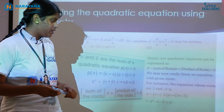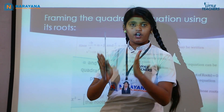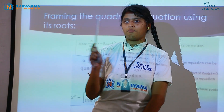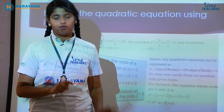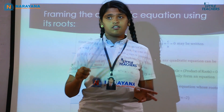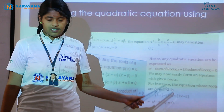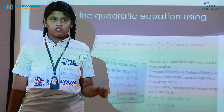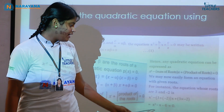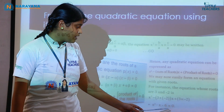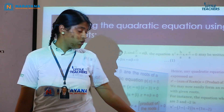Let me give an example. Let the roots be 3 and −2. Sum of the roots: 3 + (−2) = 3 − 2 = 1. Product of the roots: 3 × (−2) = −6. Using the formula x² − (sum of roots)x + (product of roots): x² − (1)x + (−6) = 0, which gives x² − x − 6 = 0. If you have doubt, you can factorize this equation and you will get the same roots back.